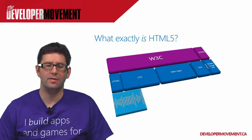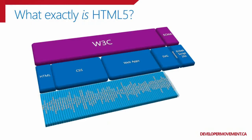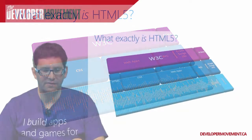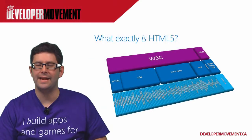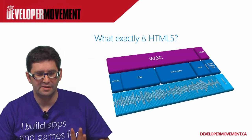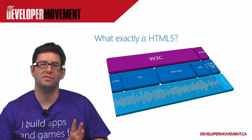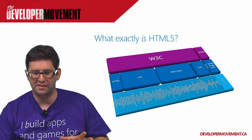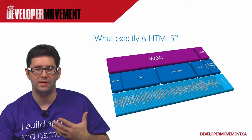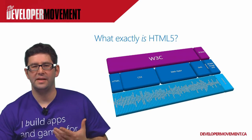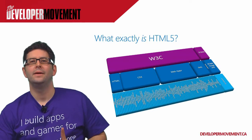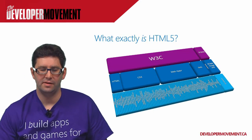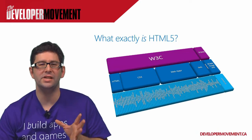Below them are the actual standards, and as you can see, there are quite a few. When people say HTML5, they're usually talking about all these standards, even though HTML itself is actually only like a set of 10 of these standards out of 50 or 70. There's a lot to it beyond just HTML. CSS and web apps are actually the largest amount of standards that need to be ratified. And this is really what HTML5 is all about.